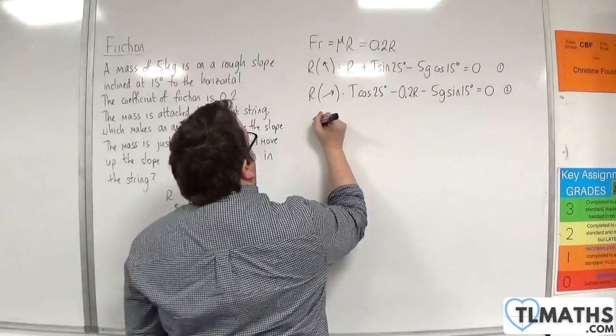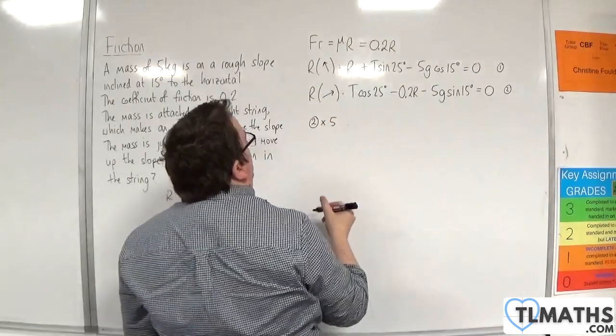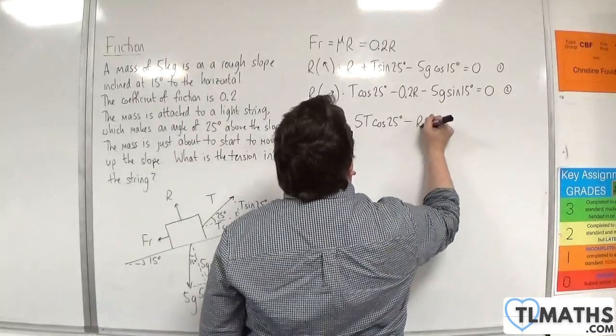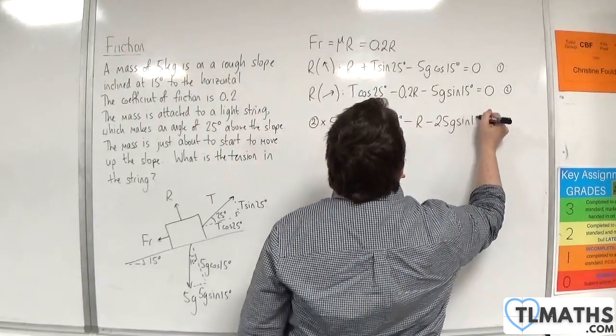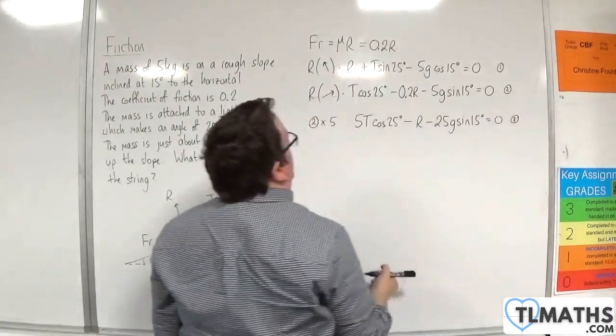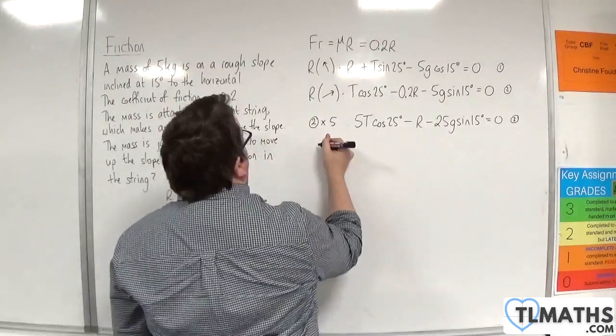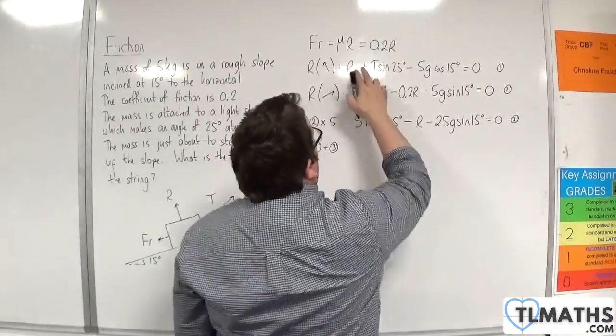I'm going to multiply equation 2 through by 5 to turn that into minus r. So I'm going to have 5T cosine 25 degrees, take away r, take away 25G sine of 15 degrees is equal to 0. Let's call this equation number 3. If I now add equation number 1 and number 3 together, then the r's are going to cancel.